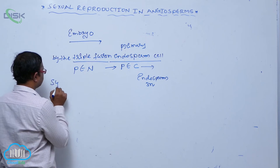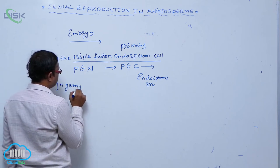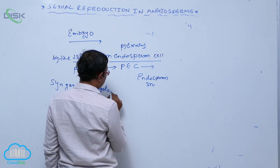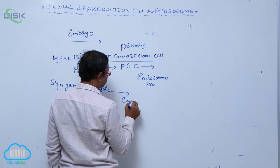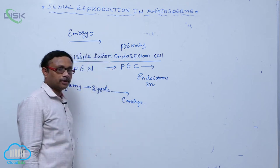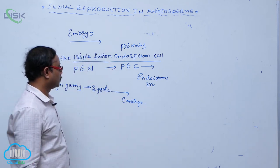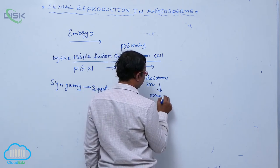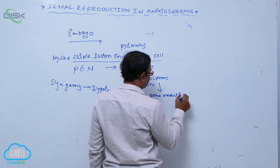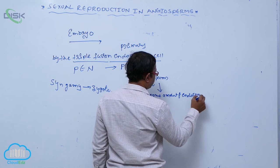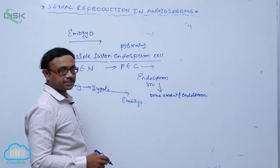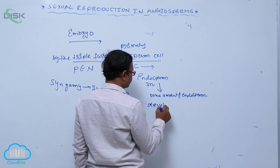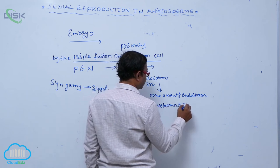By syngamy, a zygote is formed. Then the zygote is converted into that embryo. This embryo development takes place from the zygote, after some amount of endosperm is formed. After some endosperm is formed, embryo development proceeds and occurs.